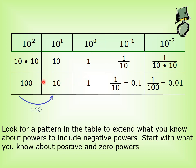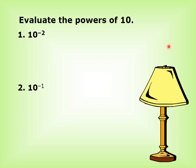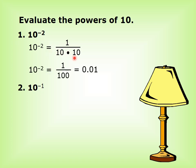Each time we are dividing by 10. So 10 power negative 1 equals 1 over 10, or 1 divided by 10, equals 0.1. And 10 power negative 2 equals 1 over 100, or 1 divided by 100, equals 0.01.